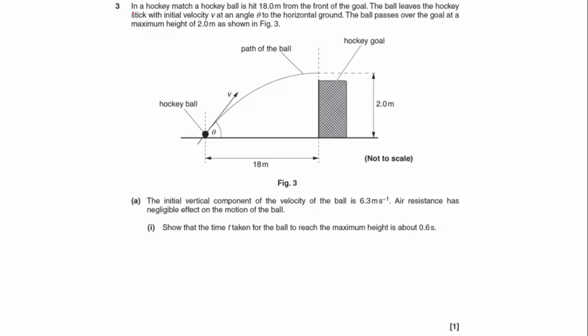So question 3. In a hockey match, a hockey ball is hit 18 metres from the front of the goal. The ball leaves the hockey stick with an initial velocity of V at an angle of theta to the horizontal ground. The ball passes over the goal at a maximum height of 2 metres, as shown in figure 3.